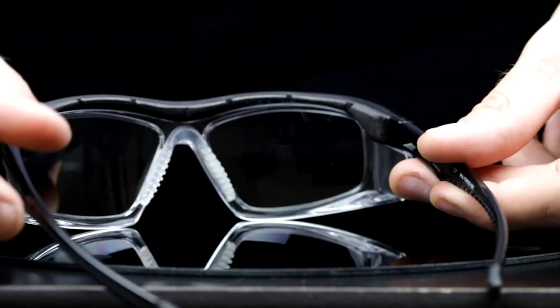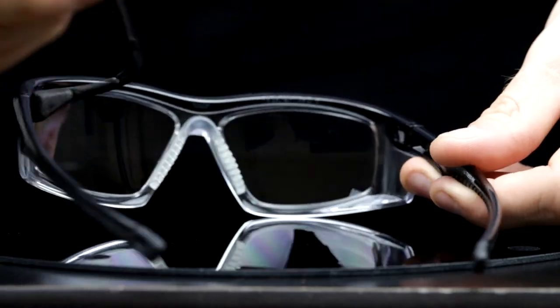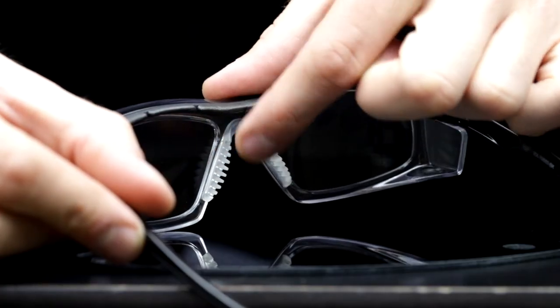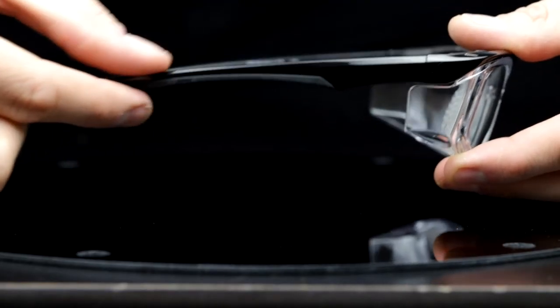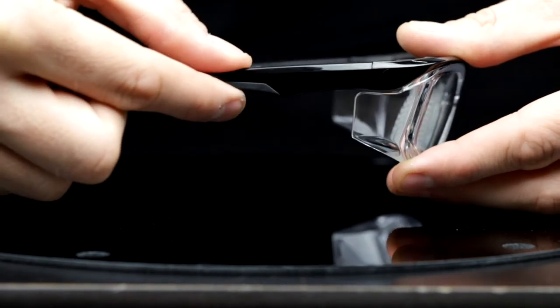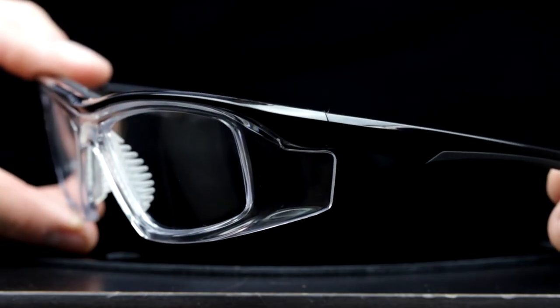They come with a removable rubberized brow guard and perforated rubberized nose pads for comfort and a secure fit. These glasses are also equipped with rubberized temple bars and integrated side shields for additional protection.